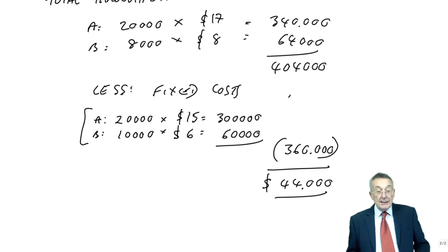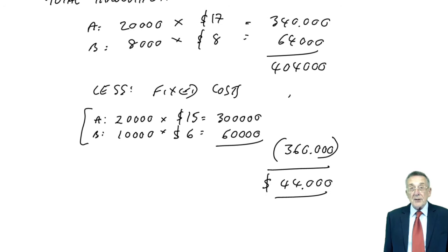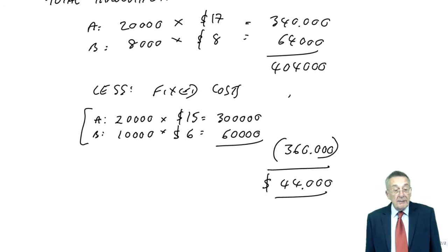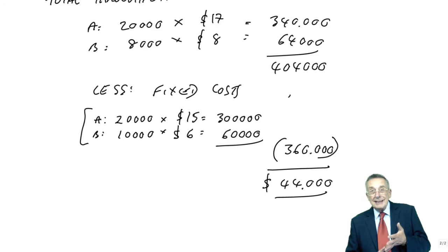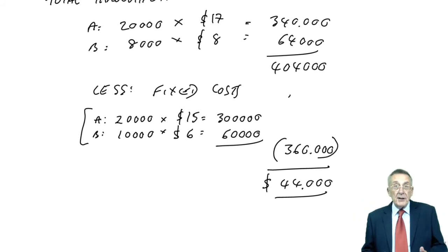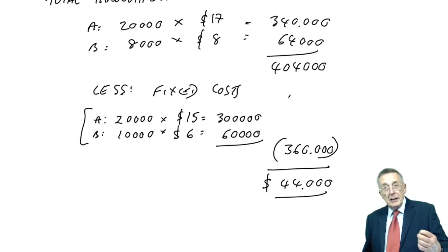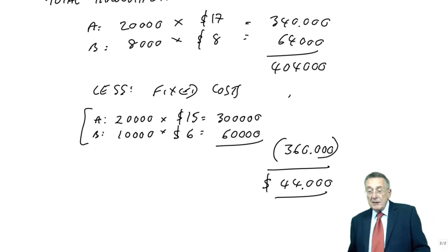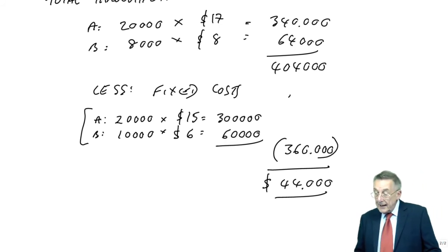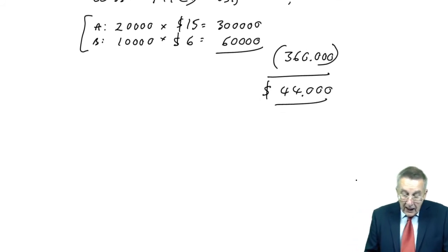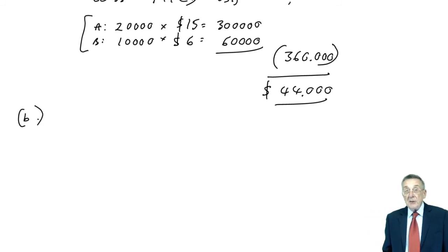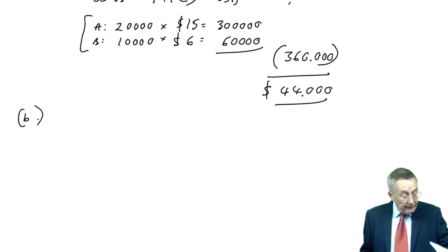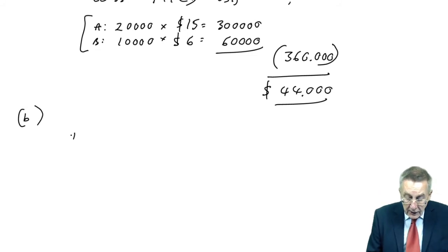And there we are. To do all of that is unlikely in just one objective test question, but each bit of it could be relevant — knowing what we mean by contribution in the first exercise, and throughput in the second, and the fact that we rank products on the basis of contribution per unit of limited resource, or throughput per unit of limited resource. Part B of the question asks us to calculate and interpret the throughput accounting ratios.